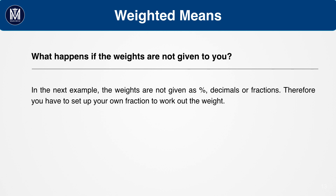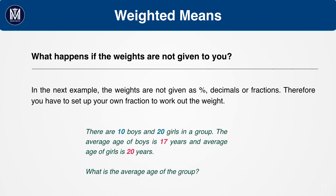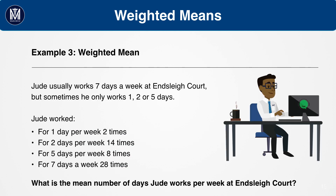What happens if the weights are not given to you? In certain questions, the weights will not be given in the form of decimals, percentages, or fractions. Looking back at the first question we did, you were not actually given the weights. Instead, you had to work them out as 1 third for boys and 2 thirds for girls using the question information. In the next example, you are again not given the weights. Remember: first identify the values which will make up your mean, and then allocate the weights. Do not get mixed up between your values and your weights.